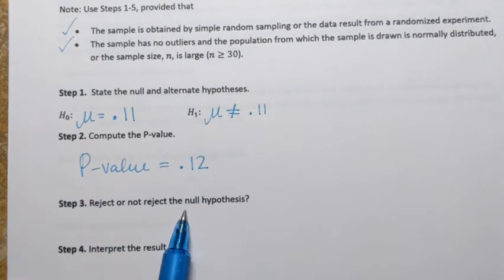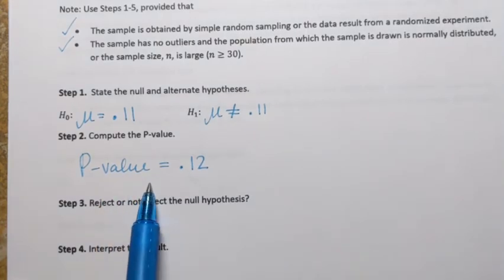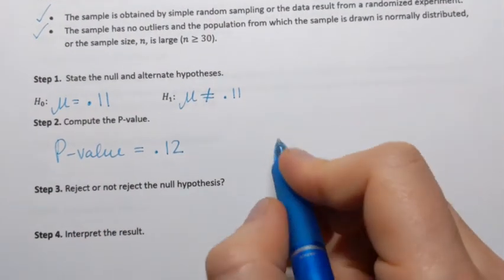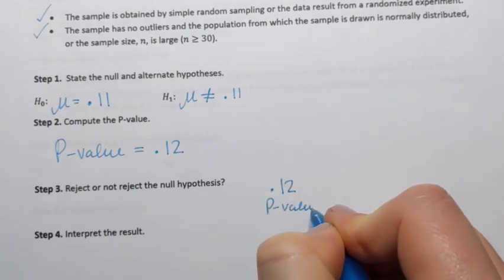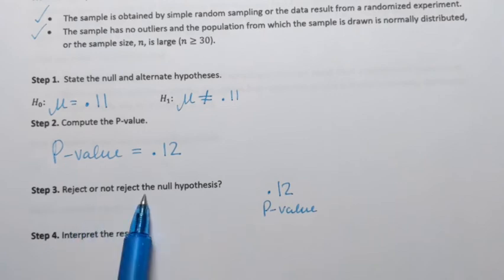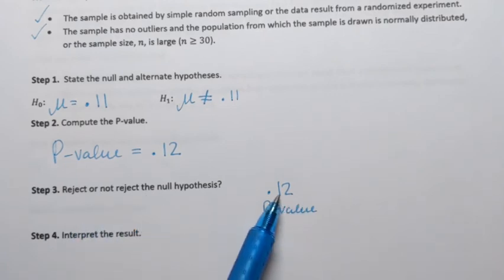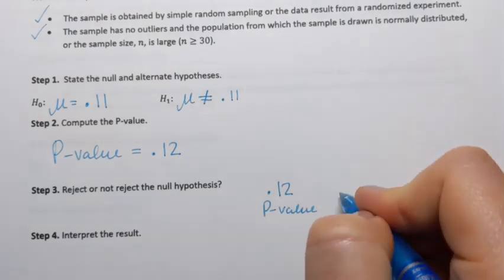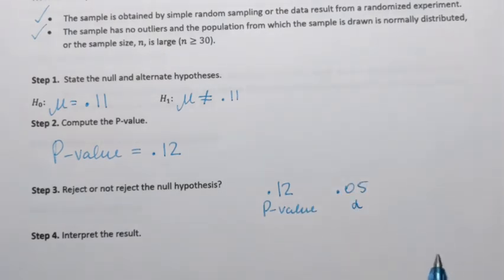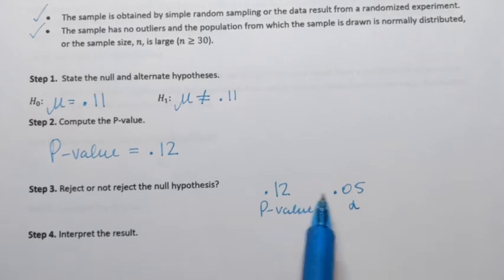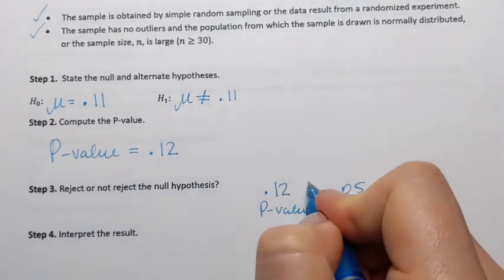Do we reject or not reject the null hypothesis based on the found p-value? P-value is 0.12. To determine or to answer this question, we have to compare that to the provided level of significance, which is 0.05 for our example. That is alpha, level of significance, and the sign that we have to use between them is the greater sign.